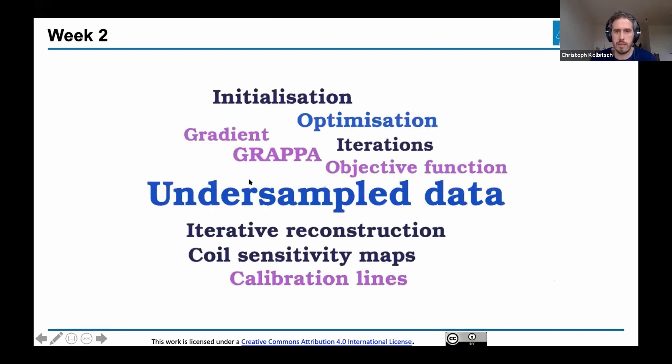As a summary for today, it's all about undersampled data. We'll cover different types of reconstruction: the classic ones such as GRAPPA which doesn't need iterative approaches but uses basic information from coil sensitivities to fill in missing data, to iterative reconstructions where we minimize objective functions. That's all I wanted to show. Are there any questions?